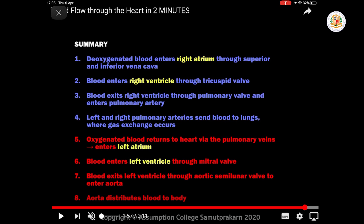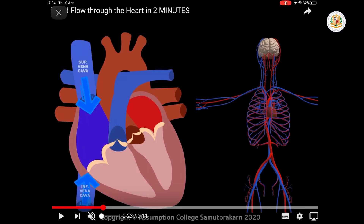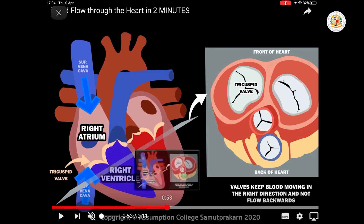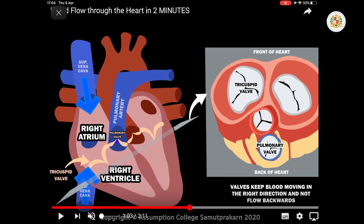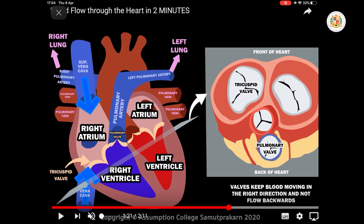Step 7 — Blood exits the left ventricle through the aortic semilunar valve. Step 8 — The aorta distributes blood to the body. For your homework, Master would like you to sketch or draw the full diagram of the heart in your notebook.